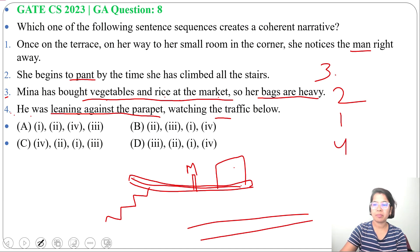So next will be four. First bought vegetables, second she is climbing the stairs, third on the way she noticed a man, then fourth that man was leaning and watching the traffic.